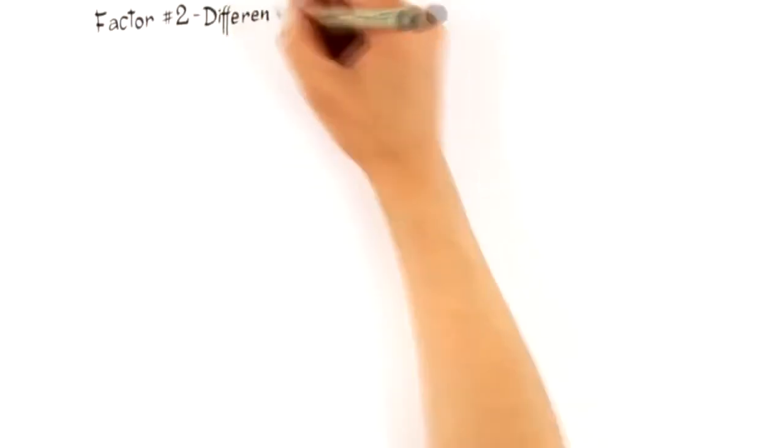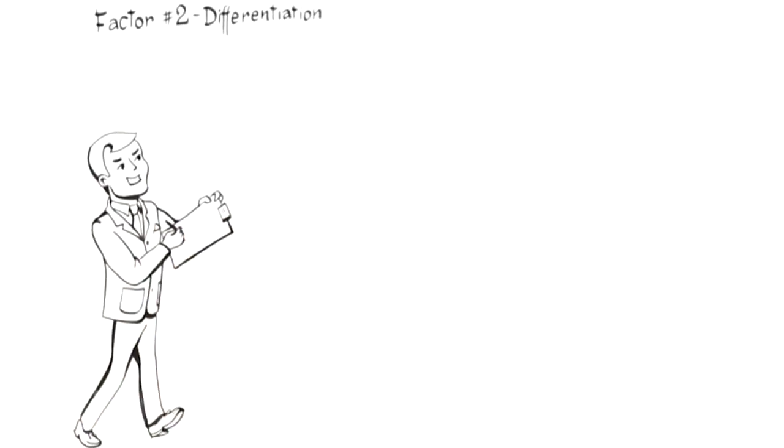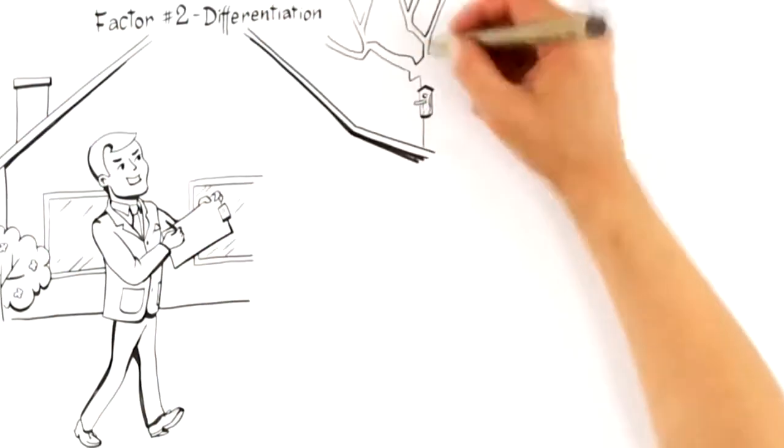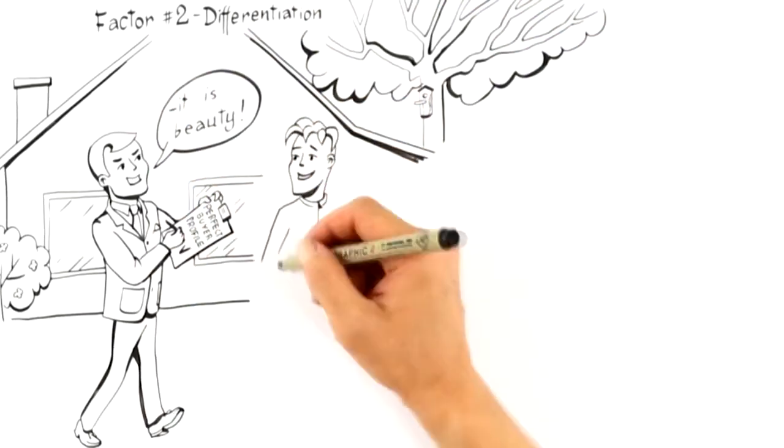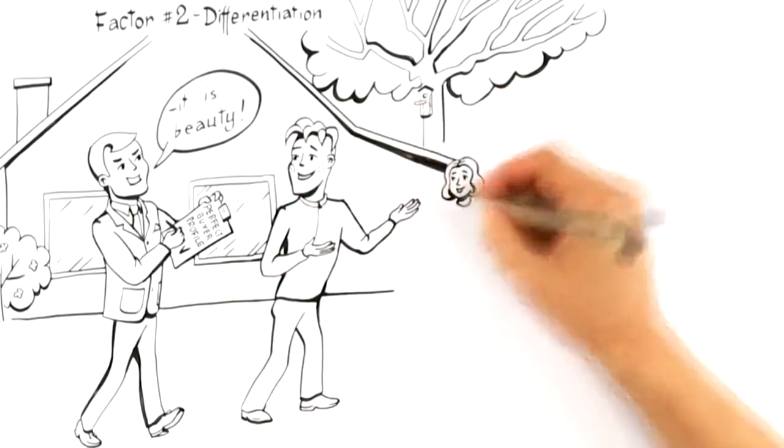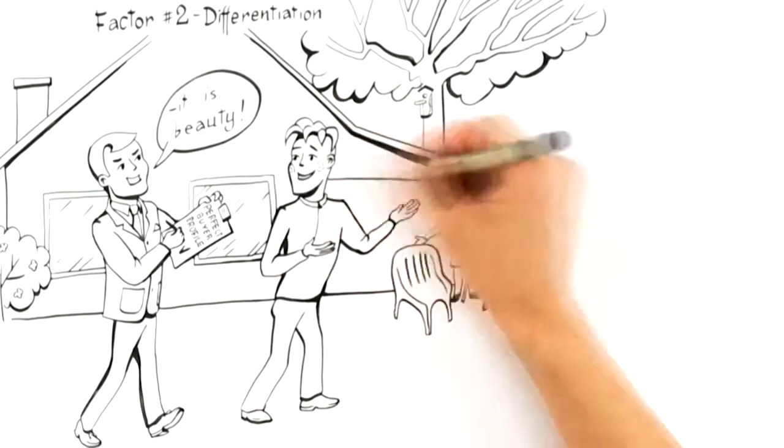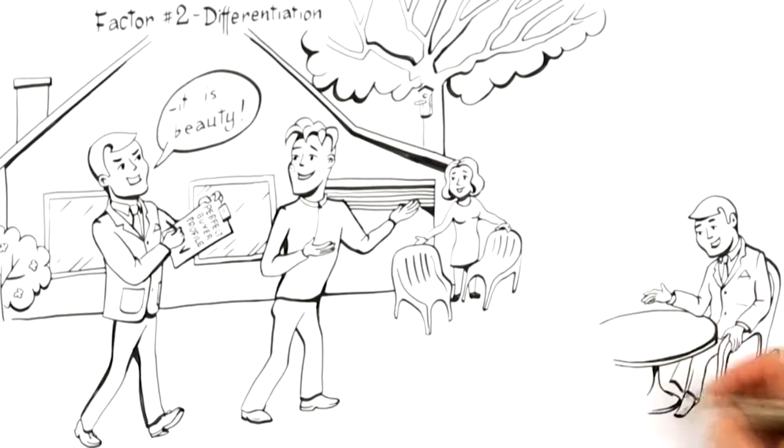This leads us to factor number two, differentiation. To attract the highest possible offer, a home must be positioned to attract buyers who will perceive its highest value. Expert advertisers understand that there is a perfect buyer profile for the buyer that would be willing to pay the most money for your home.